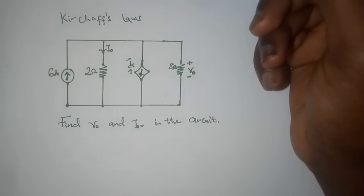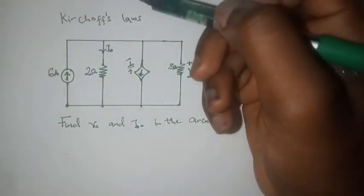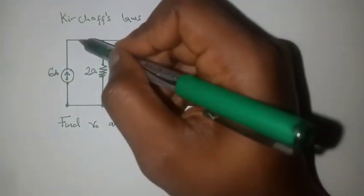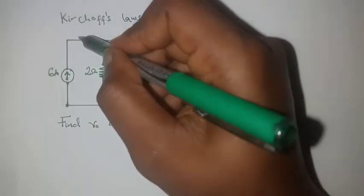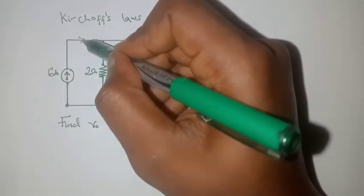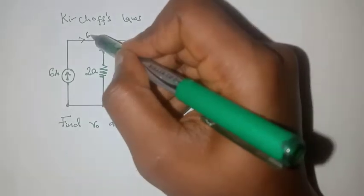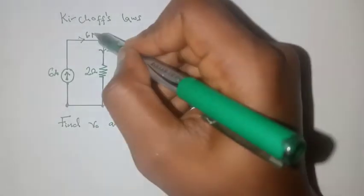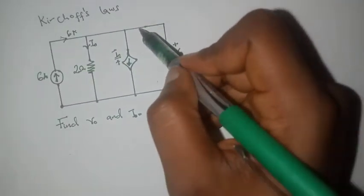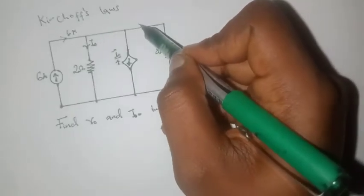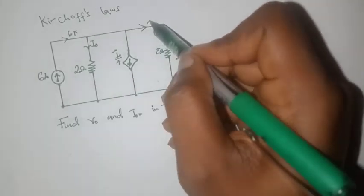In the previous example, what we're going to be doing first is, I'm going to assign current to the branches that have no current. This would be 6A and this branch would have CI1.